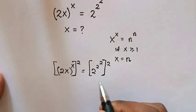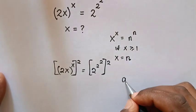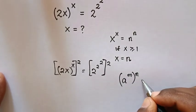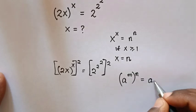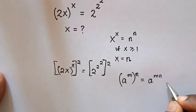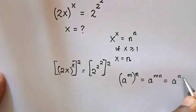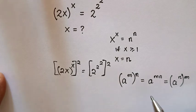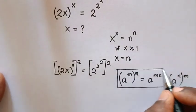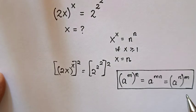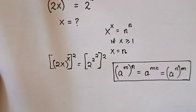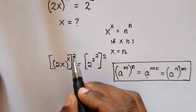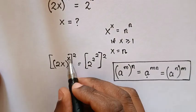From this equation, we will apply the exponential rule which is a power of m bracket power of n is equals to a power of mn, which is equal to a power of n bracket power of m. As from the rule, we will multiply the powers, so in our equation we will multiply power of 2 times power of x.